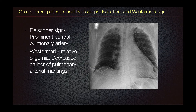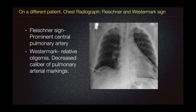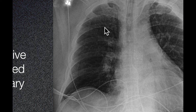Additional radiographic findings described are the Fleischner and Westermark signs, as in this different patient's chest radiograph. Fleischner's sign is a prominent central pulmonary artery, as seen here, but this finding is not specific for PE and could be seen in patients with pulmonary arterial hypertension. Westermark sign is relative oligemia on the periphery, consistent with decreased caliber of the pulmonary arterial markings, with decreased pulmonary arterial markings than expected.